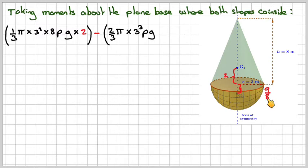So that will be two thirds pi times three cubed times rho times g, which is the weight of the hemisphere, times the distance here which is going to be nine over eight. Now that will be equal to the total mass times g for gravity, so the total weight times y bar, where y bar is the distance from the plane here to the center of gravity that we're trying to find. Doing a bit of canceling now, the g's will cancel out, and then if we work out one third times three squared times eight times two, we get 48 pi times rho.